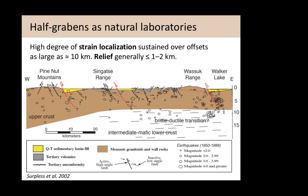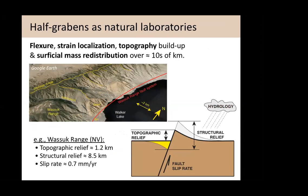If we zoom in on the Wassock Range in Nevada, we have all the ingredients needed to say something interesting about the feedbacks between the surface and upper crustal deformation. Most of the strain is taken up on the master fault. Slip on this fault creates a footwall block that uplifts and creates a range, while subsidence in the hanging wall creates a basin filled by sediment — here it's covered by a lake. The total slip has been estimated at almost 10 kilometers, yet the relief created was only about a kilometer from lake to drainage divide. A significant amount of mass has been removed as the system was growing, in contrast to a mid-ocean ridge setting where limited reworking would preserve the footwall as an oceanic core complex.